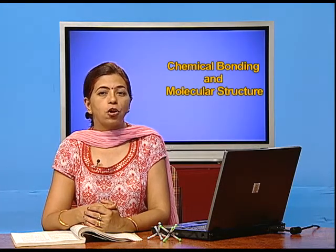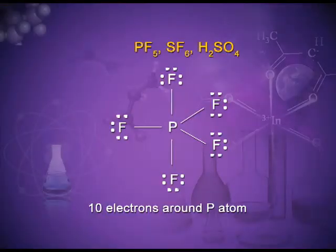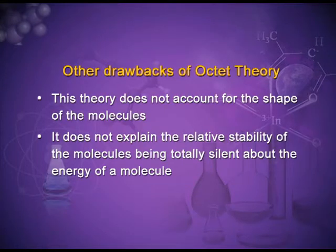Let us see the electron dot structures of these exceptions. In PF₅ (phosphorus pentafluoride), phosphorus is in the center surrounded by five fluorine atoms with five covalent bonds, giving ten electrons around phosphorus. Other drawbacks of octet theory are that it does not account for the shape of molecules, and it does not explain the relative stability of molecules, being totally silent about the energy of a molecule.